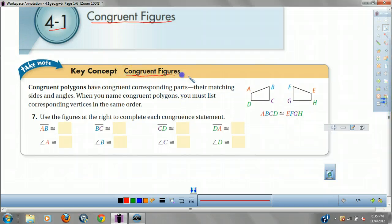Congruent Figures. Congruent Figures are any two figures that have congruent corresponding parts, they're matching sides and angles. When you name the congruent polygons, you must list corresponding vertices in the same order.